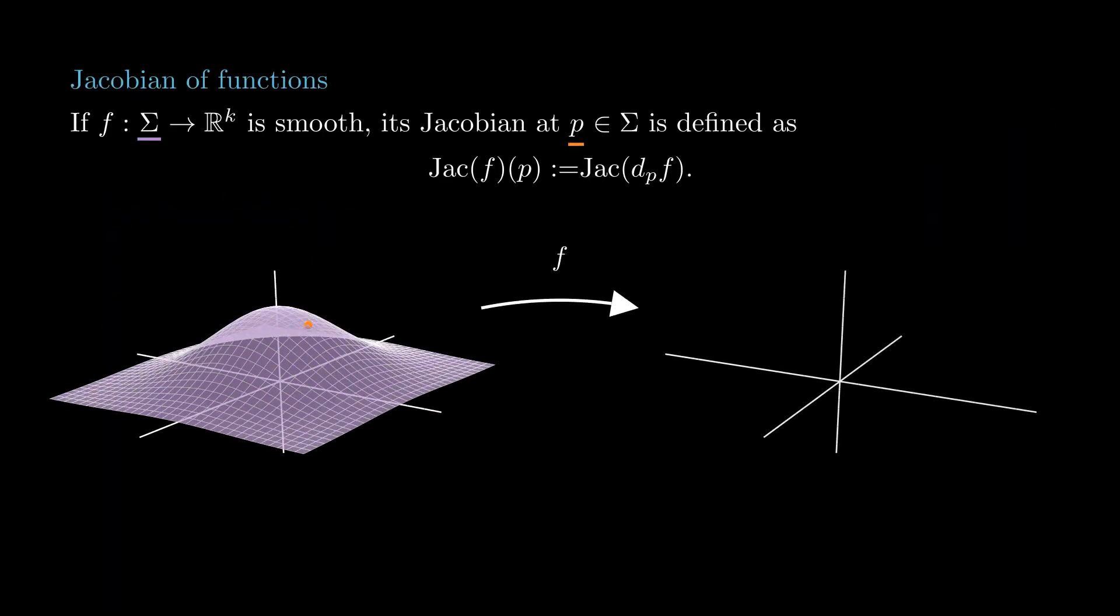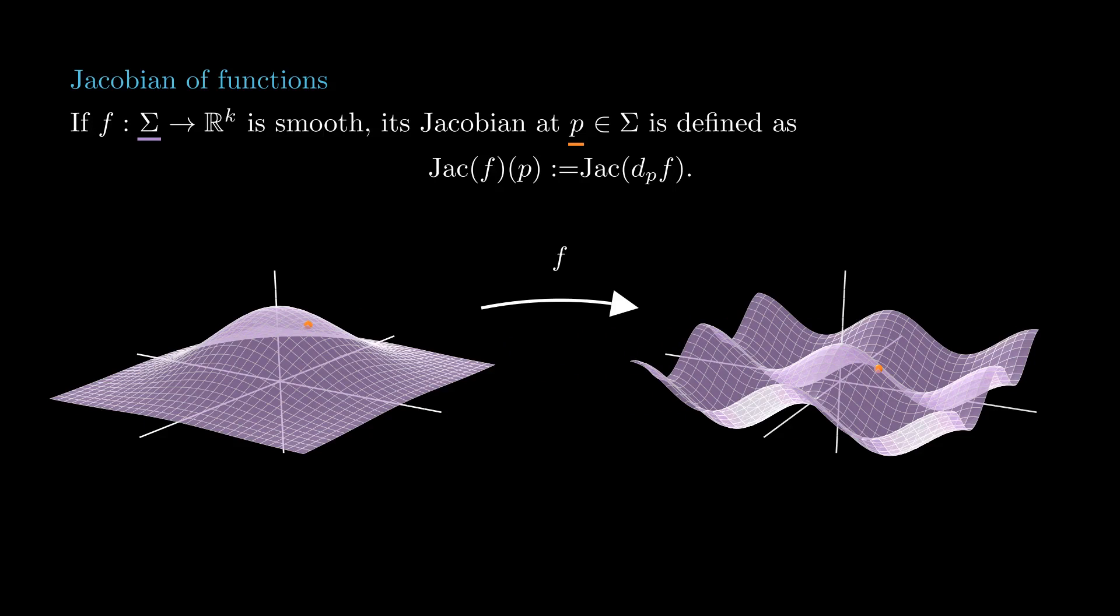For a smooth function f from sigma to rk, its Jacobian at a point p is defined to be the Jacobian of the linear function Dpf.